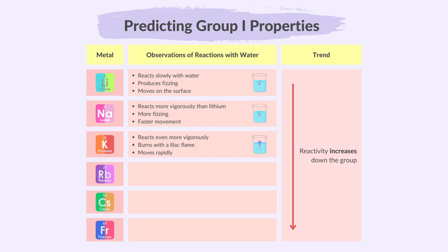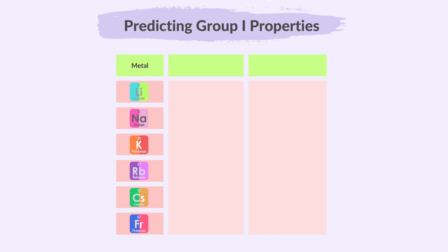The predictions are: rubidium will react violently with sparks, and the reaction will be more vigorous compared to potassium. Caesium will cause a violent explosion, and francium is too reactive to predict. Even when reacting these elements with chlorine or oxygen, the same trend in reactivity is observed — reactivity increases as you go down group 1 in each reaction. The other properties of group 1 elements may also be predicted by observing trends in known elements.